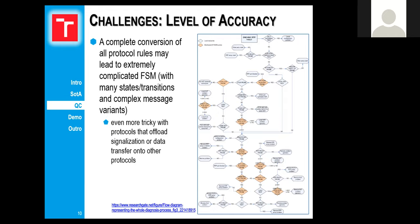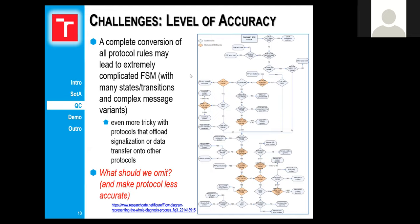Now I'd like to talk about some challenges we face when implementing our models. The first challenge is the level of accuracy. Some protocols can be very complex — for example RTP, which can result in finite state machines that look extremely complicated. This gets even worse because RTP uses SIP for signaling, making it very hard to debug. The question is: what functionality can we omit without negatively impacting the model?